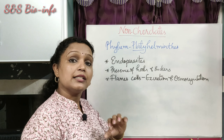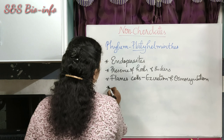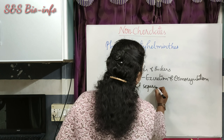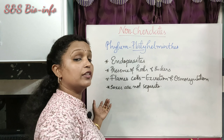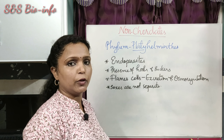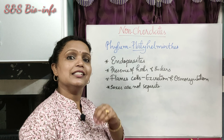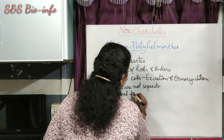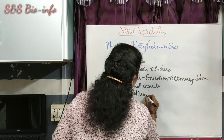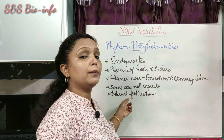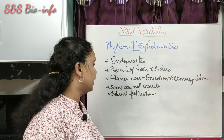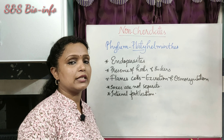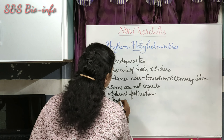Regarding reproductive features: sexes are not separate, meaning most of them possess both sex organs in the same body. Fertilization is internal — the fusion of male and female gametes takes place inside the body. Development is indirect, with many larval stages.